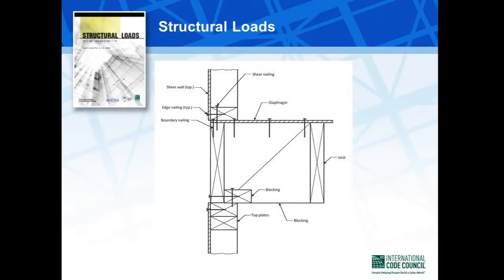Shown on your screen are the load paths for cord forces due to wind in a wood-framed building. Typical gravity and lateral load paths in buildings made of other material types, such as concrete and steel, are provided in this chapter as well.